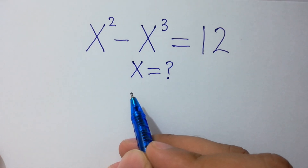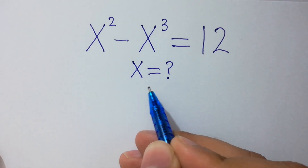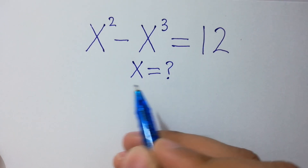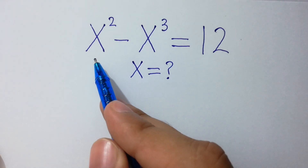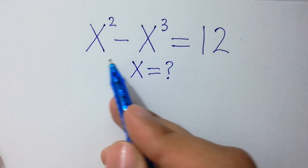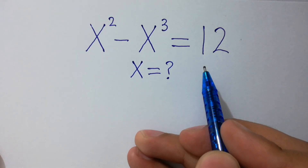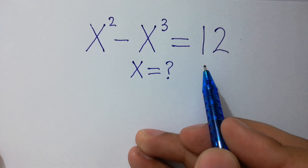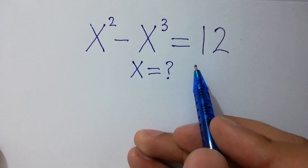Hello friends. What is the value of x if we have x squared minus x cubed equals 12? Let's solve it.